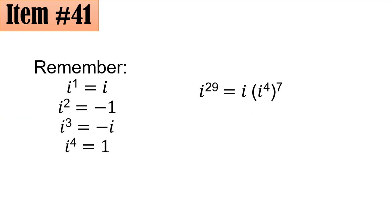So with that, i to the fourth is 1. So this becomes i times 1 to the seventh, which is i times 1, or simply i, letter A. Moving on, I hope you got this.